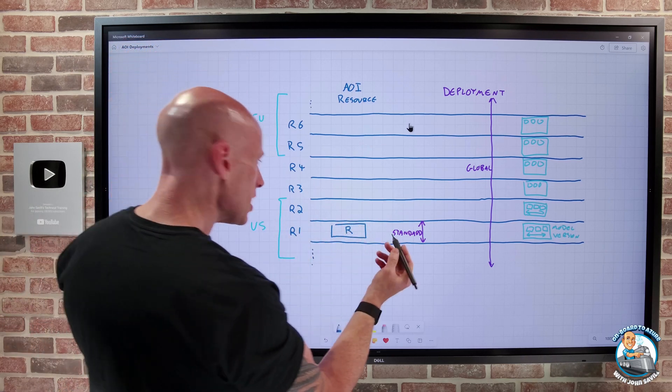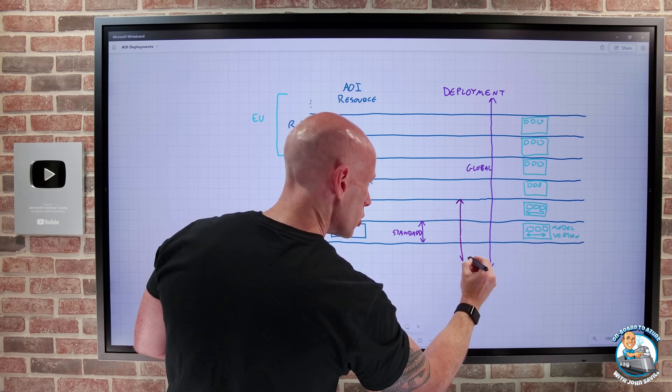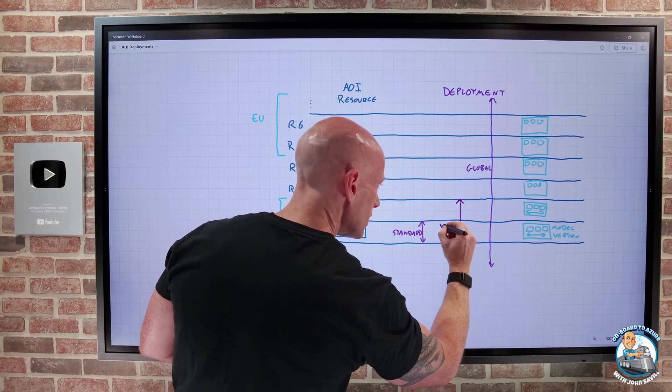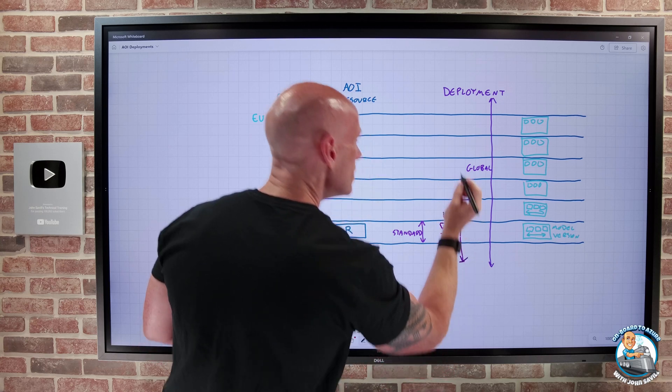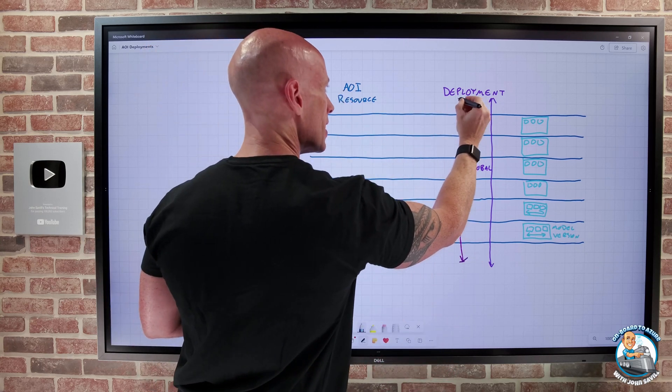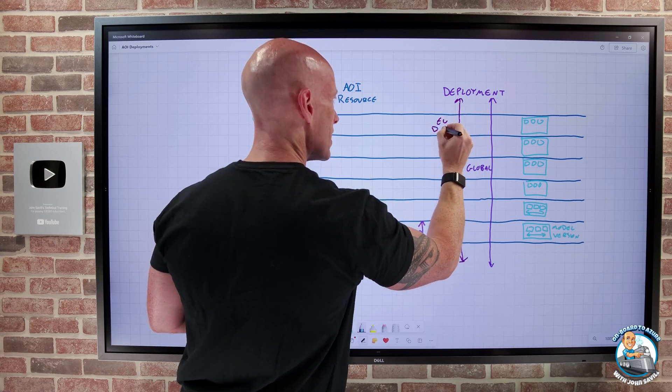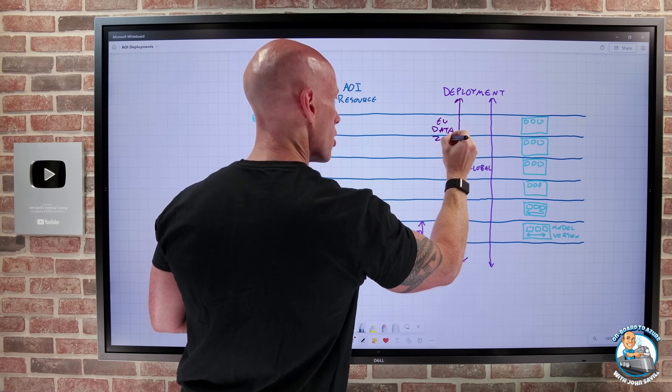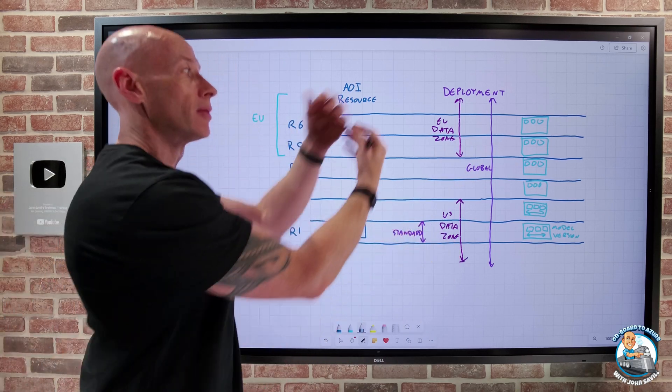So now when I think about it, there is a US data zone and there's also going to be an EU data zone that is comprised of the sets of regions in the US and the EU.